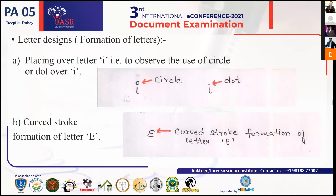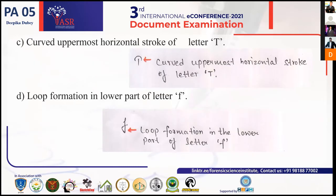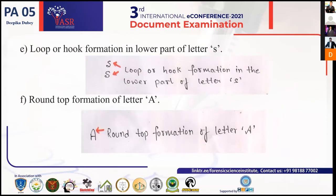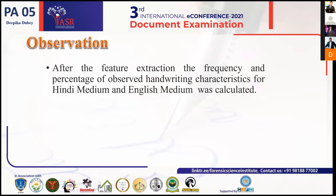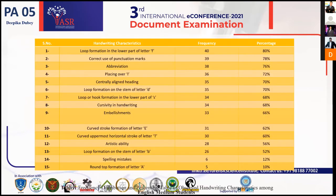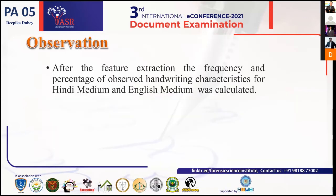The letter formations studied were: placing of dots over the letter I — whether a dot or a circle was used — curved stroke formation of letter E, curved uppermost horizontal stroke of letter T, loop or hook formation in the lower part of letter F, loop or hook formation in the lower part of letter S, round top formation of letter A, and loop in the stem formation of letters B and D. The frequency of occurrence and percentage of these characteristics were then studied.